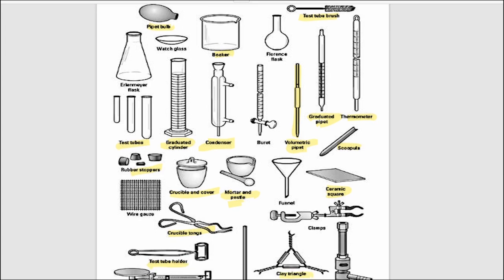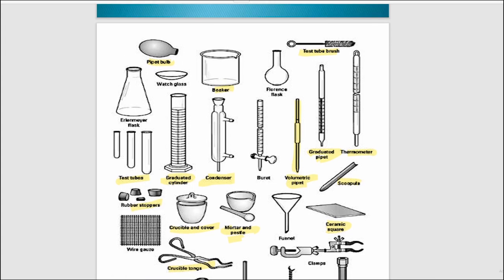You can observe some more apparatus here like safety bulb or pipette bulb. This safety bulb is used at the mouth of this pipette, this volumetric pipette or the simple pipette. This one is a Liebig condenser used at the top of the reflux apparatus. This condenser can also be used along with the simple distillation apparatus.